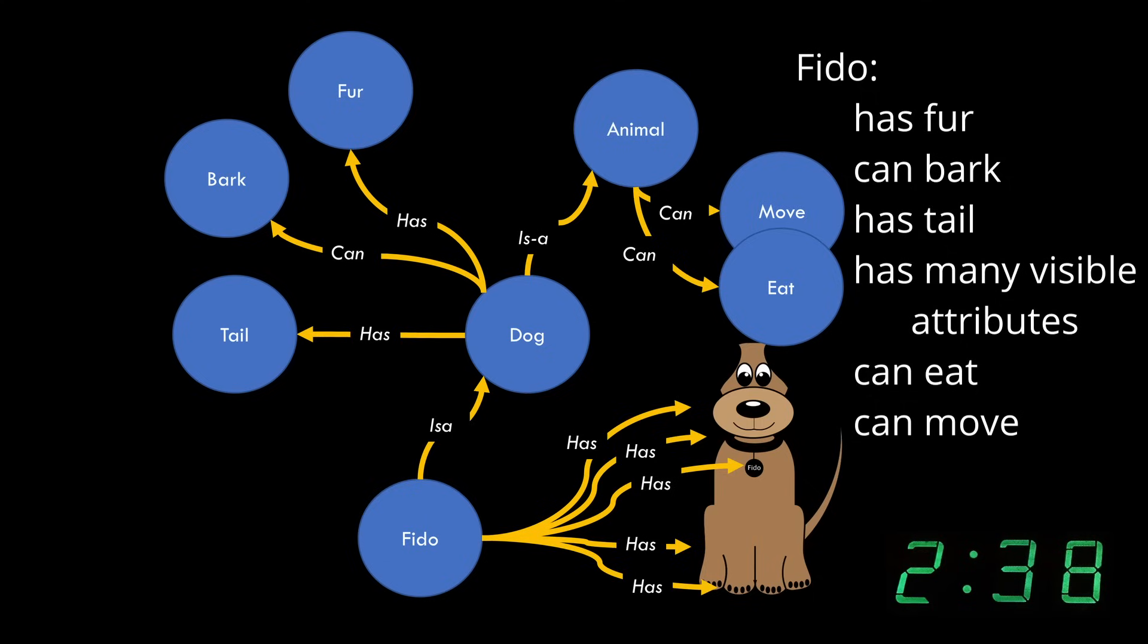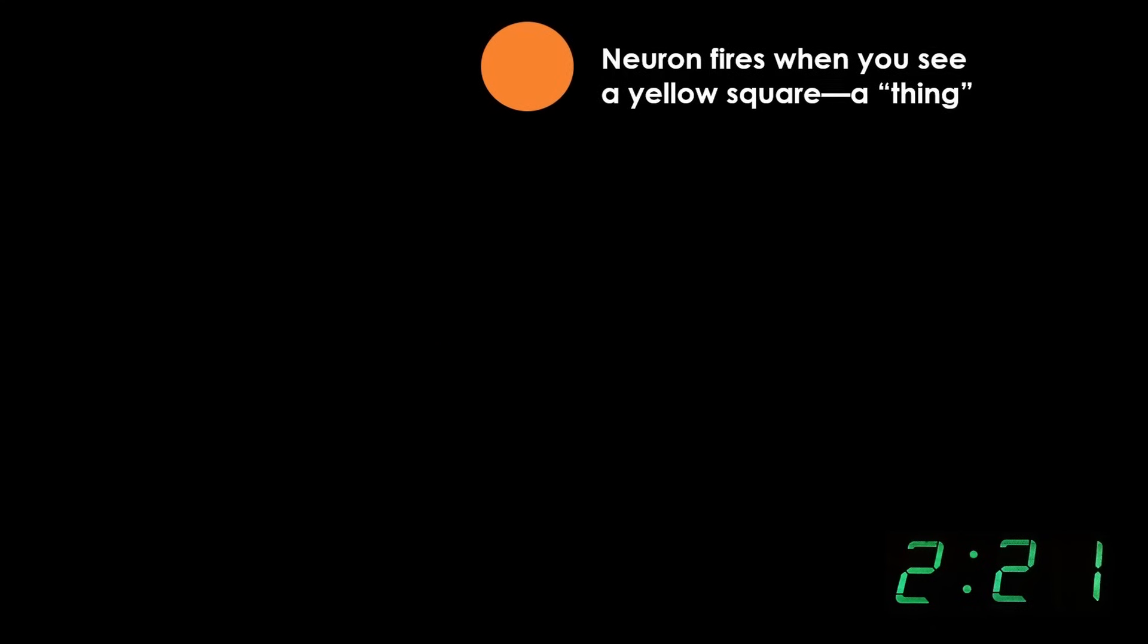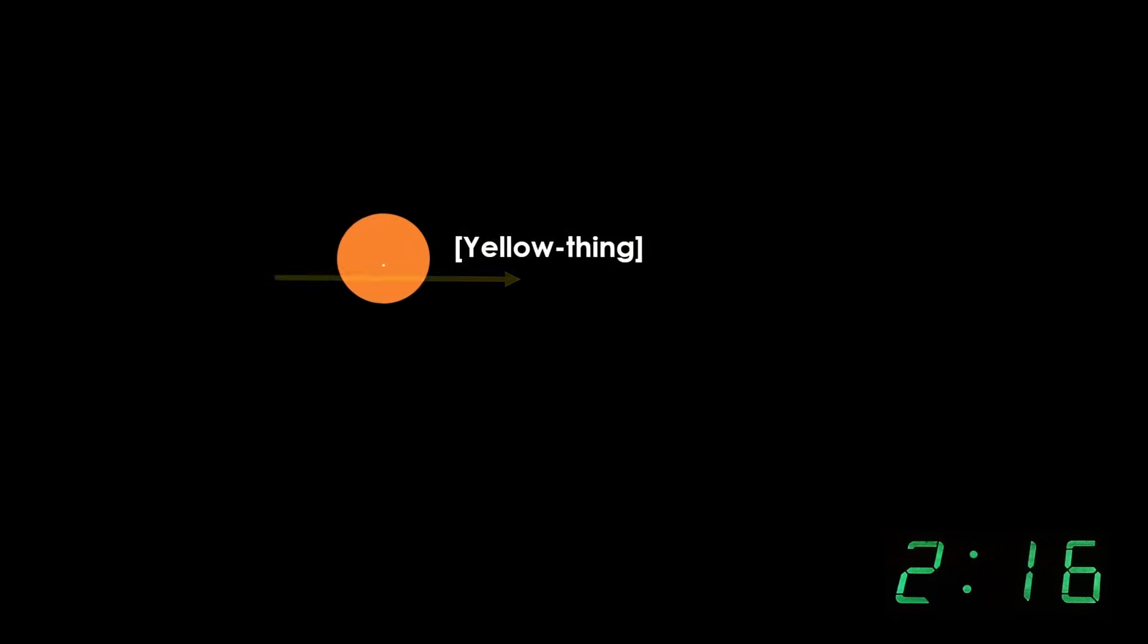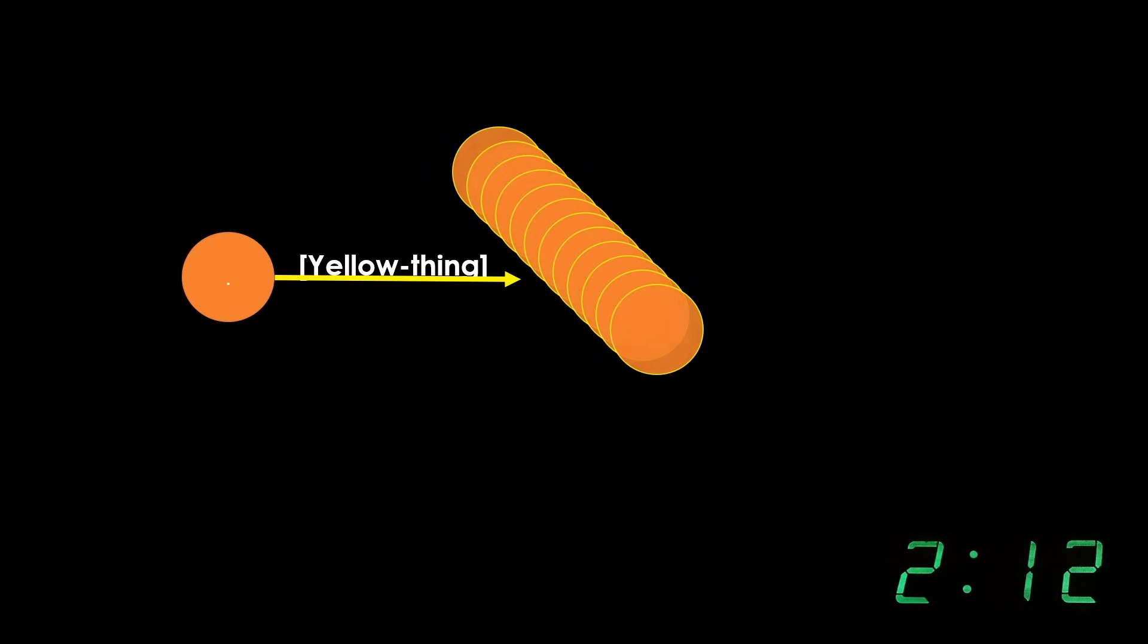With 16 billion neurons in your neocortex, you can know many millions of things, each of which might have thousands of relationship connected attributes, which are also things. With this sort of memory, when you see an object which causes its related neuron cluster to fire, you can also recall its attributes and when an attribute thing fires, you can recall other things which have that attribute.